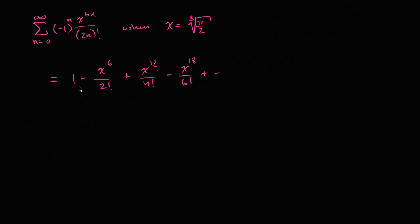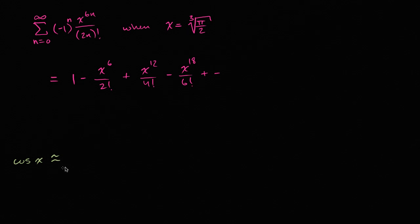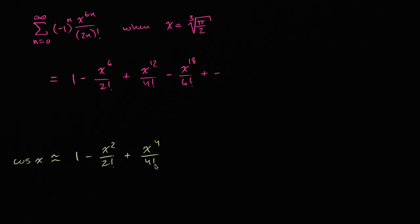Offhand, I don't immediately recognize a trigonometric function, but this looks suspiciously familiar — awfully close to the Maclaurin series for cosine of x. Let me remind ourselves what that is. The Maclaurin series for cosine of x is approximately one minus x squared over two factorial, plus x to the fourth over four factorial, minus x to the sixth over six factorial.